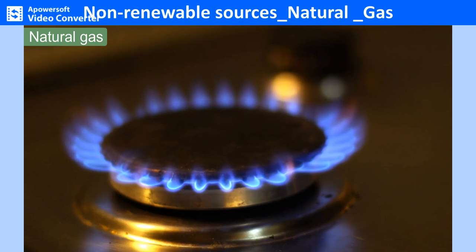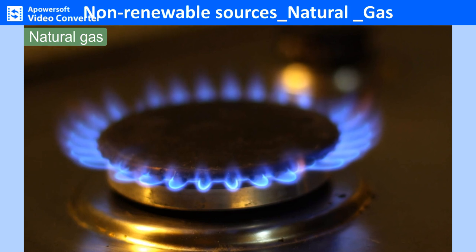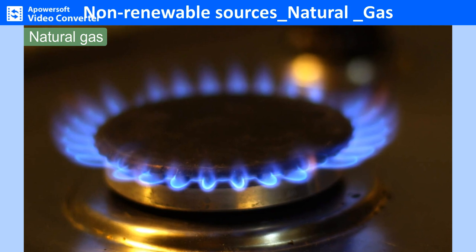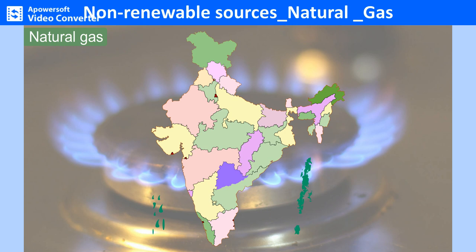Natural gas is cleaner than other fossil fuels. It emits less carbon dioxide than oil or coal, and is commonly used in homes for cooking, heating and clothes dryers. In India, most gas production comes from the offshore area in the west. Assam, Andhra Pradesh and Gujarat are the major producers. Smaller quantities are also found in Tripura, Tamil Nadu and Rajasthan. Natural gas accounts for 8% of the total power generated.